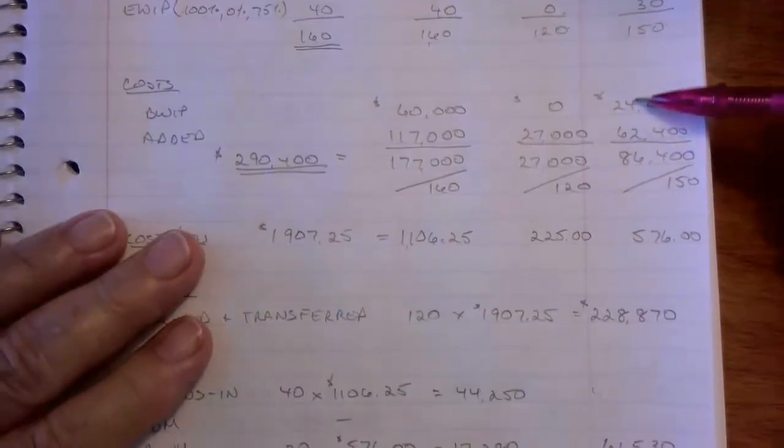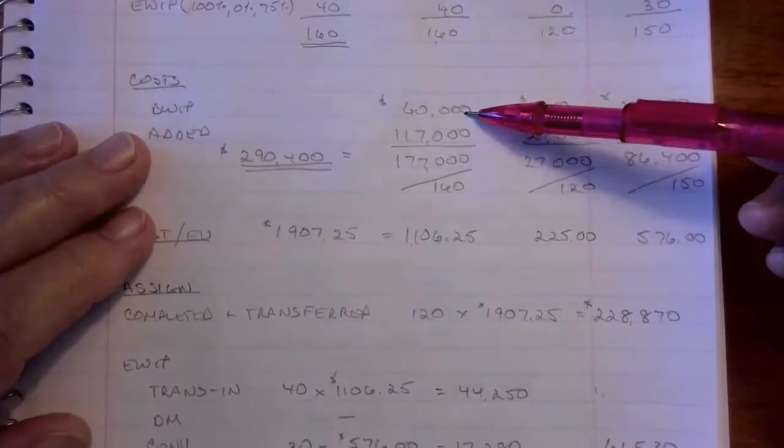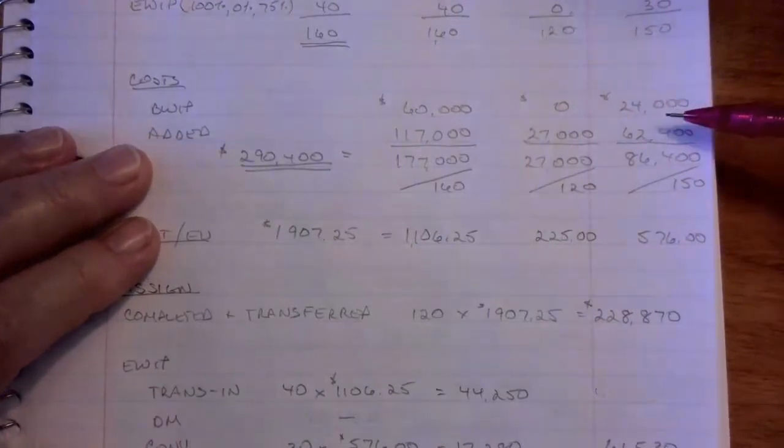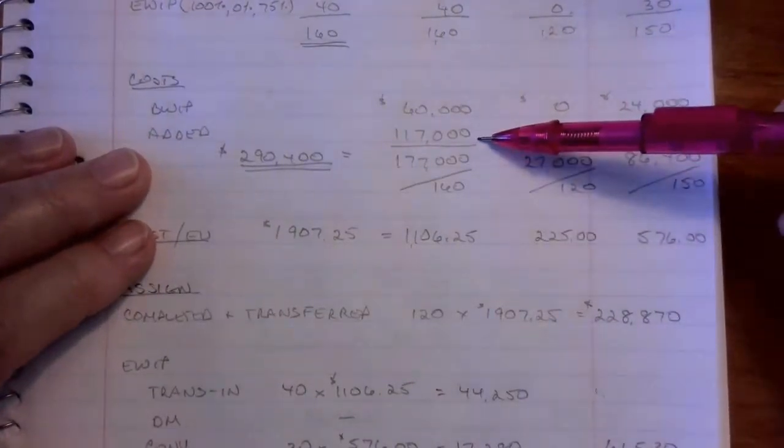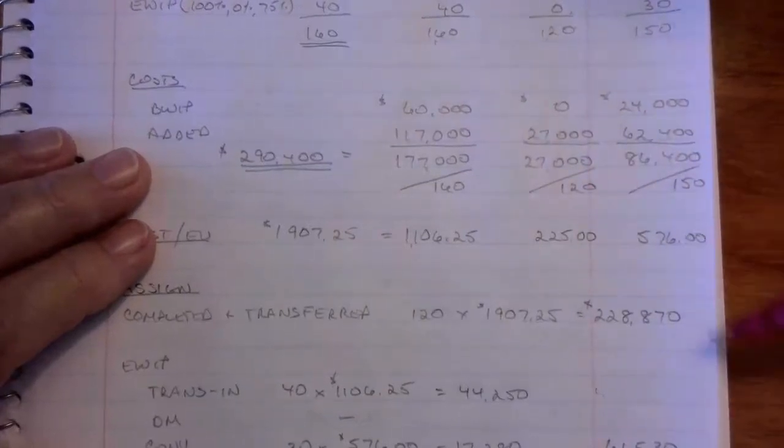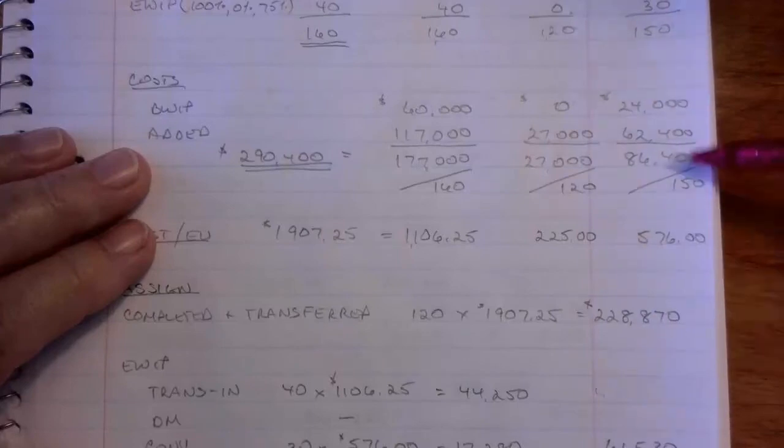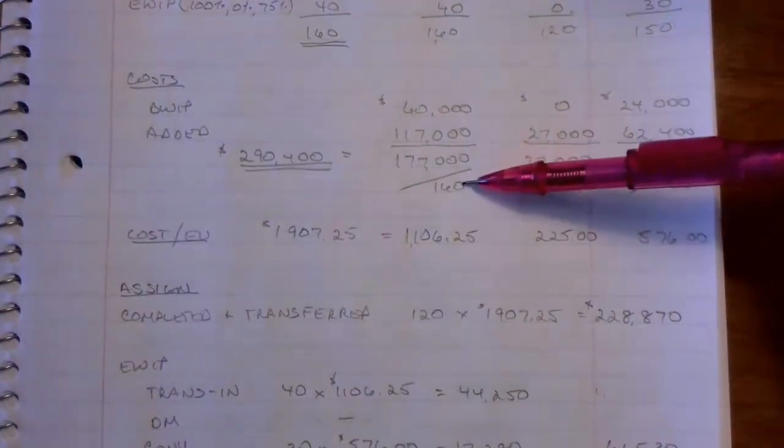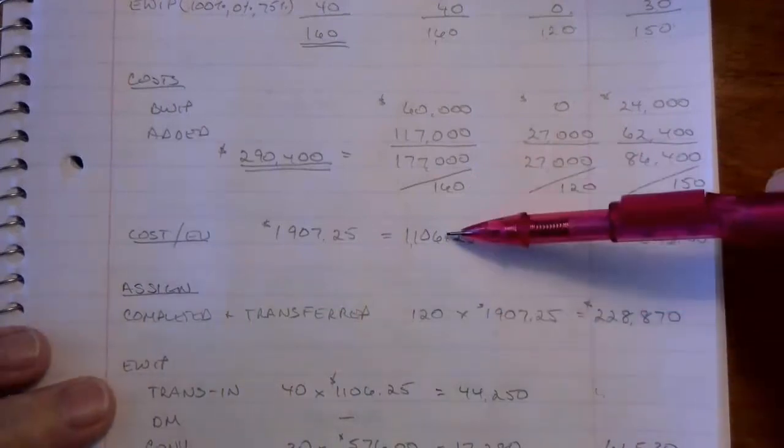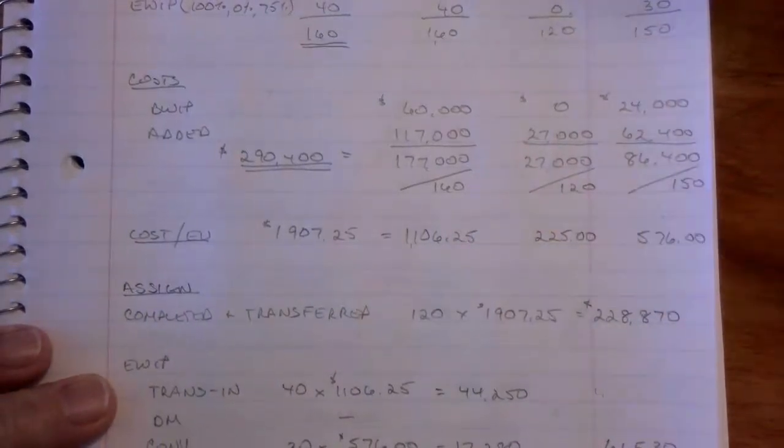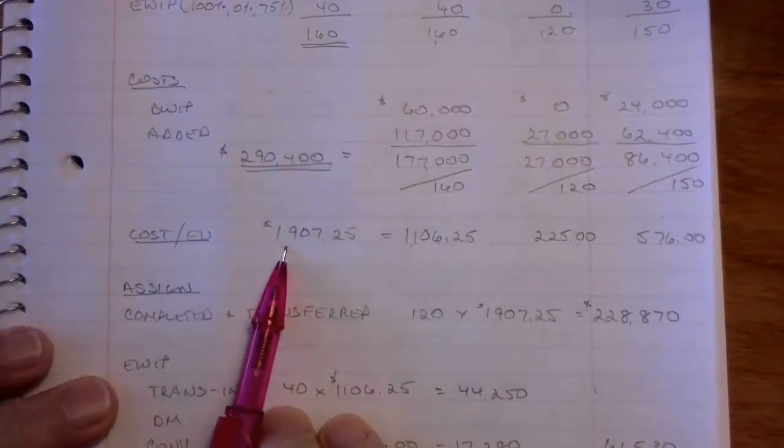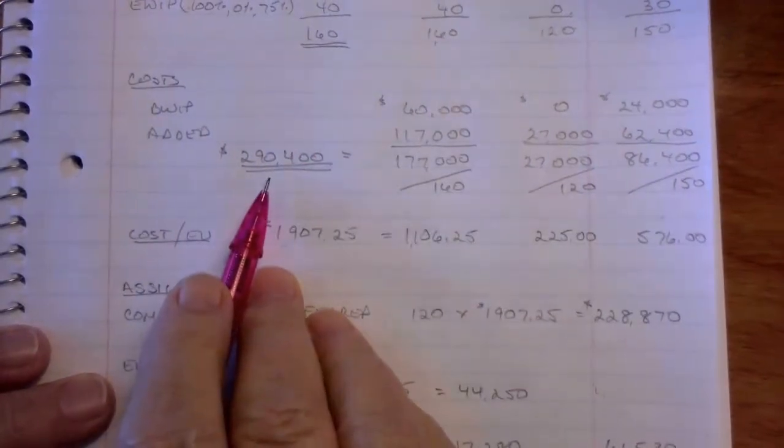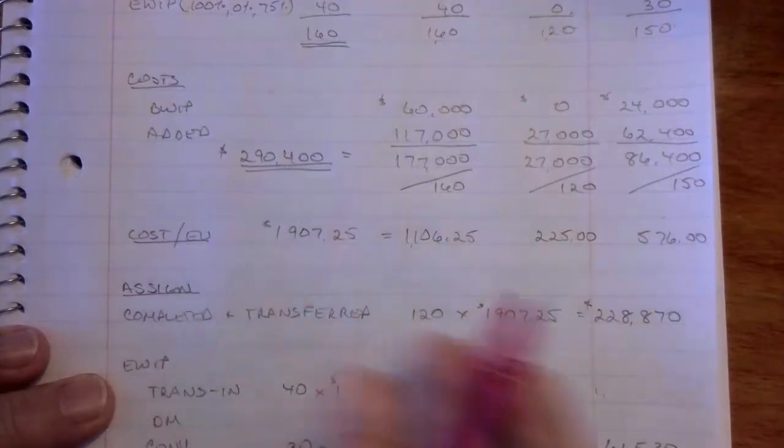So let's look at these costs then. Beginning work-in-process is 60,000, nothing for material, and 24,000 for conversion. And the costs added this period were 117,000, 27,000, and 62,400. Those are the costs added. That was all given. So there's my total cost for each equivalent unit category divided by my weighted-average equivalent units gives me my cost per equivalent unit. Here's my total unit cost, 1907.25. And there's the total amount of cash that I've got in the system here, 290,400. So this is what I've got to tie out to when I assign my costs.